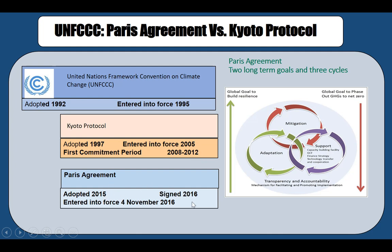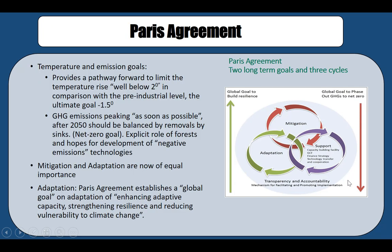The Paris Agreement was adopted in 2015, signed in 2016, and entered into force by late 2016. It essentially has two long-term goals and three cycles. The cycles combine mitigation, adaptation, and support, while the goals are to build global resilience and to phase out greenhouse gases to net zero.